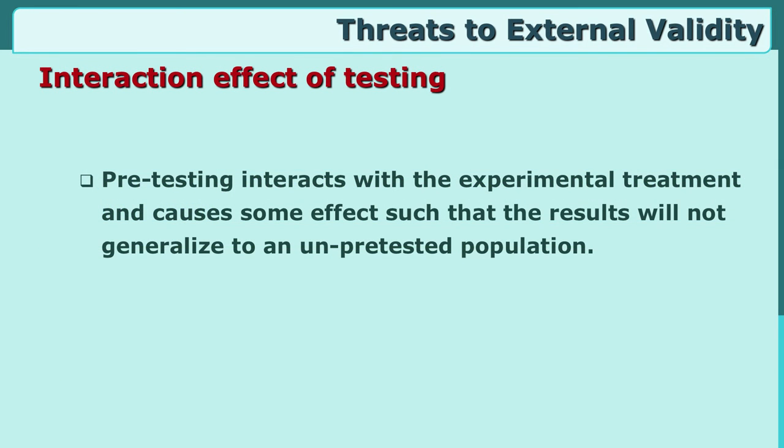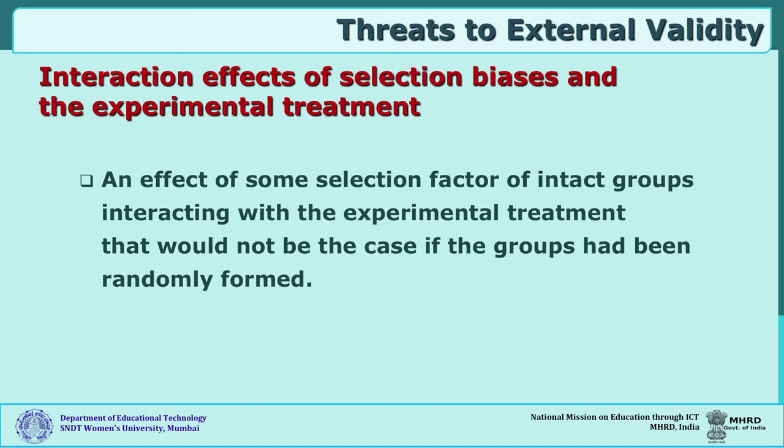The first threat is the Interaction Effect of Testing. You started with a pre-test, then gave the treatment, and then a post-test. Can you generalize your findings to an un-pre-tested situation? You do not think so — the generalizability is at stake. If you give a pre-test, it may interact with your treatment, and this is a threat to your external validity.